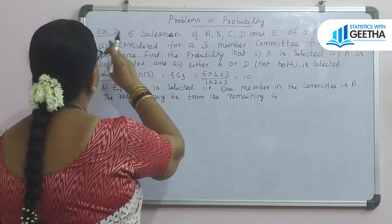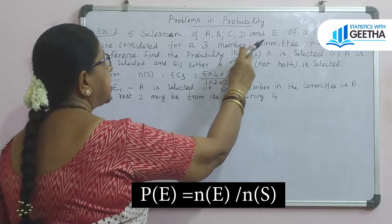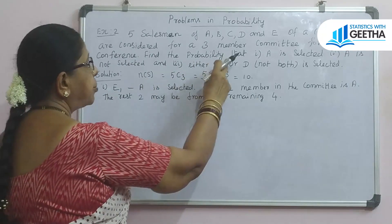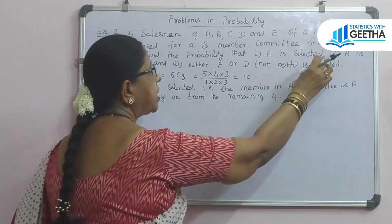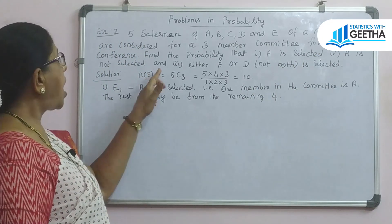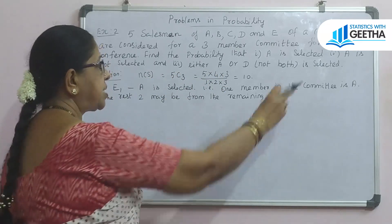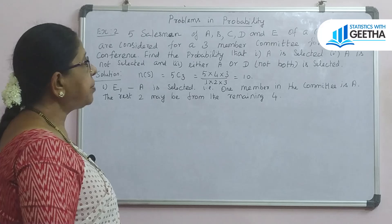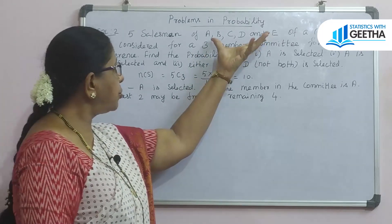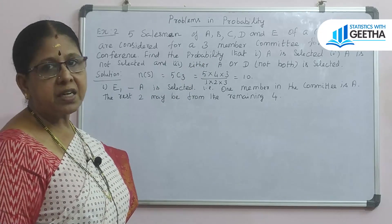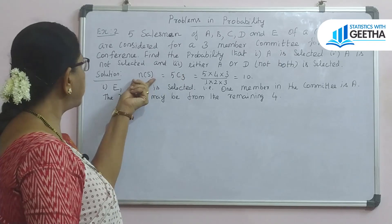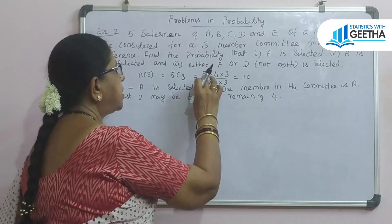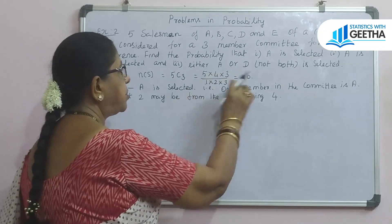Next problem: Five salesmen A, B, C, D, and E of a company are considered for a 3-member committee for a third conference. The total number of sample points N of S is 5C3, which equals 5 times 4 times 3 divided by 1 times 2 times 3, giving us 10.